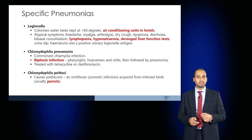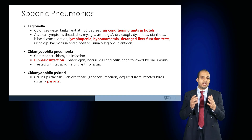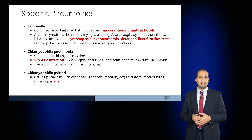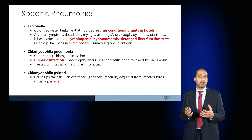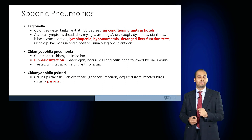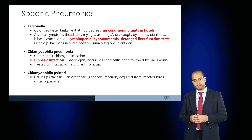Legionella colonizes water tanks kept at less than 60 degrees, and so outbreaks can be seen in hotels, air conditioning units, or areas where the water system has not been used for a while, where Legionella can colonize and aggregate, causing a public health outbreak. Patients affected with Legionella may have headache, myalgia, arthralgia, dry cough, and on blood tests may show lymphopenia, hyponatraemia and deranged liver function tests.